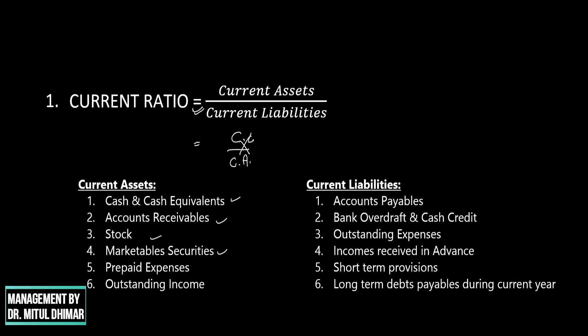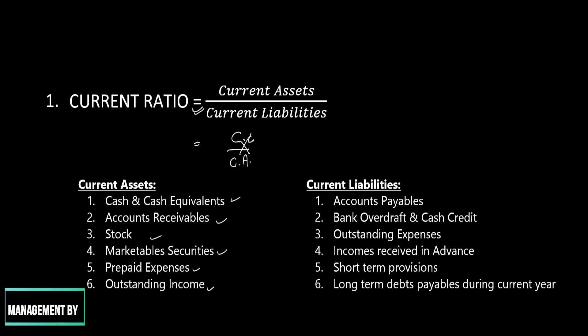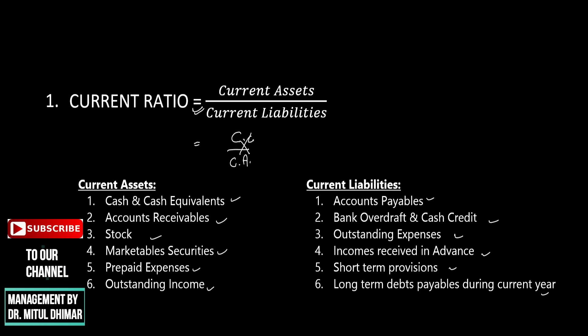Current assets include cash and cash equivalents, accounts receivable, stock, marketable securities, prepaid expenses, and outstanding income. Current liabilities include accounts payable, bank overdraft, cash credit, outstanding expenses, incomes received in advance, short-term provisions, and long-term debts payable during the current year.